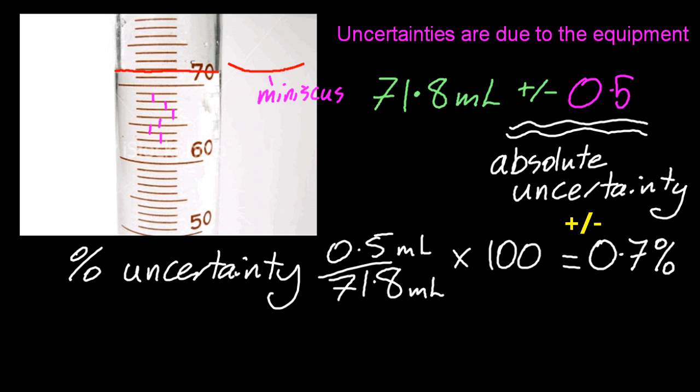Uncertainties are always measured to 1 sig fig. But my teacher says differently. Your teacher's wrong. It's only ever 1 sig fig.